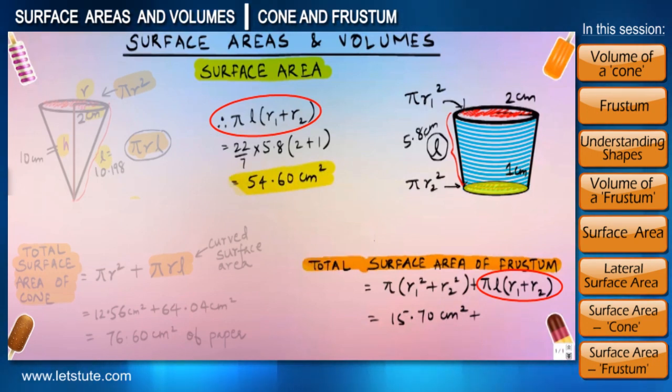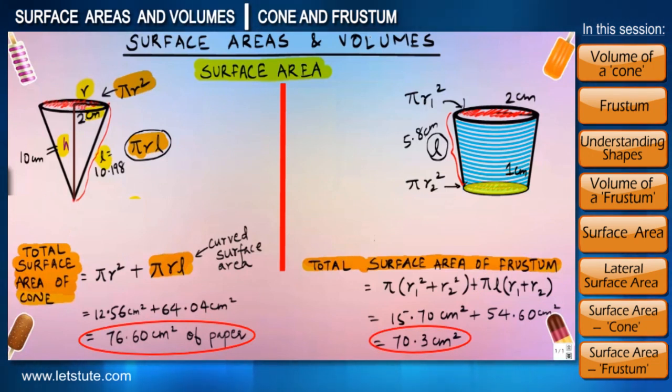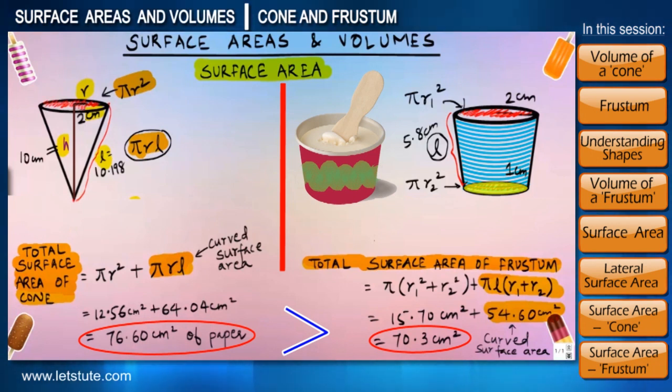So the total requirement of paper for the cup will be 54.6 plus 15.7, which will be 70.3 centimeter squares. So guys, here we can see the difference between the requirement of wrapper for each of these two shapes. From the calculations we can see cup requires approximately six centimeter squares of lesser wrapper than that required by the cone. So if a company were to decide economically between these two shapes, they'll definitely go with the cup or the shape of a frustum, as they will have to spend lesser amount on the wrapper.